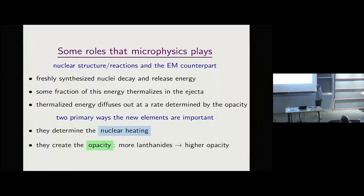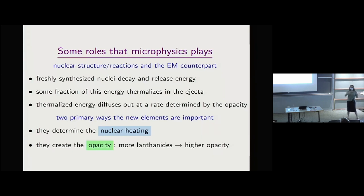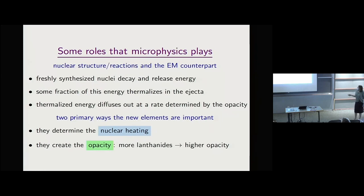Nuclei are more important than just as an opacity source in the ejecta. The energy that produces the photons needed to scatter out comes from nuclear heating. There's a first stage — a couple seconds — where you have all the rapid neutron capture and make nuclei as far as you're going to make them. Then at a day or so, there's still material off stability, still beta-decaying a little bit, and it's that decay that is producing the energy and photons that need to scatter out.